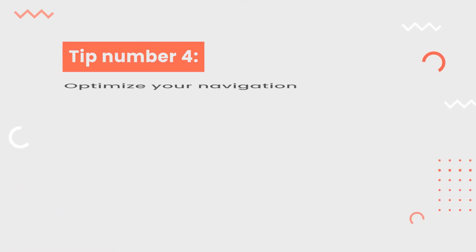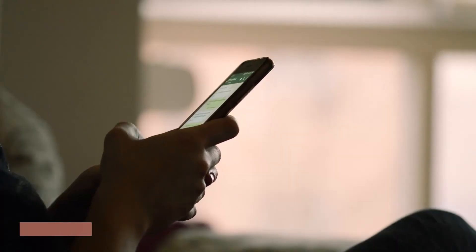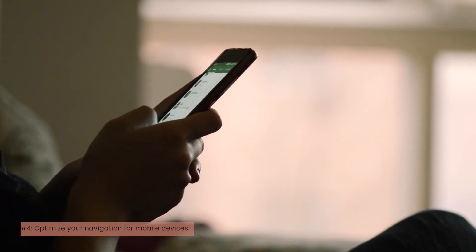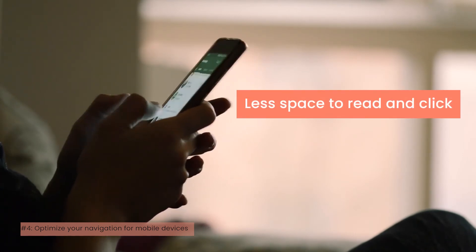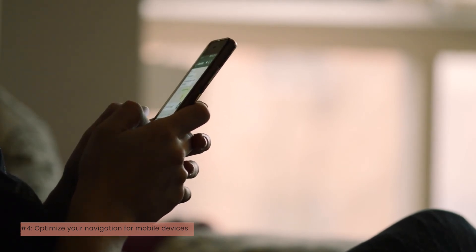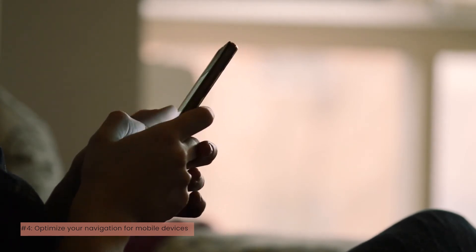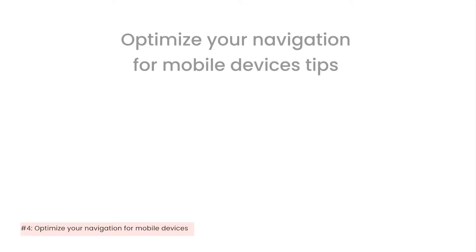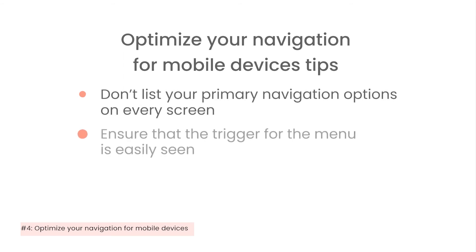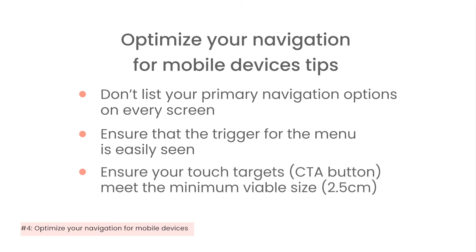Tip number 4: optimize your navigation for mobile devices. The smaller screen size of mobile devices presents additional challenges when it comes to navigation — you get less space to read and click. Therefore, everything on the navigation system needs to be redesigned to fit on mobile screens. If you only think of a hamburger menu as a solution, it's not enough. Here are some other tips: don't list your primary navigation options on every screen; ensure that the trigger for the menu is easily seen; ensure your touch targets meet the minimum viable size; and serve smaller sized images.